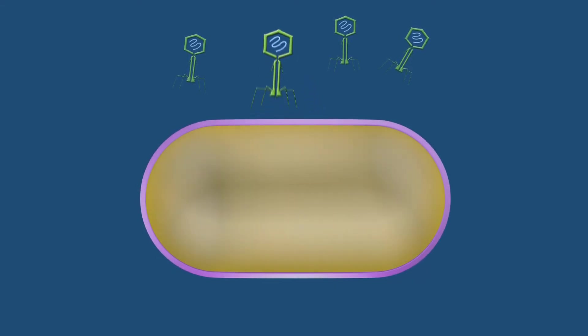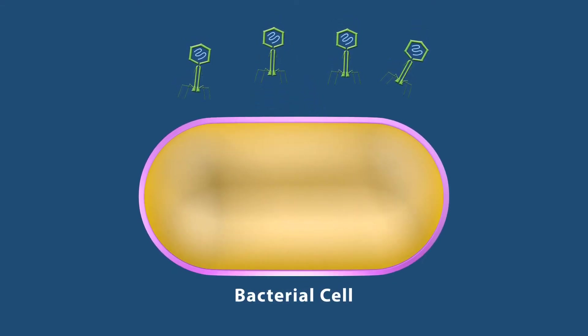When phage infects bacteria, they attach to the surface of the bacterium and inject the DNA into the cell. The protein coat remains on the outside of the cell.